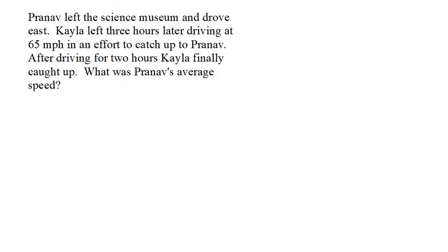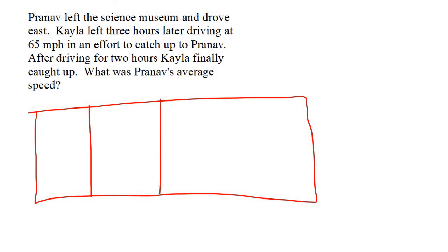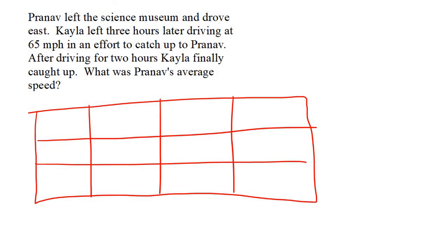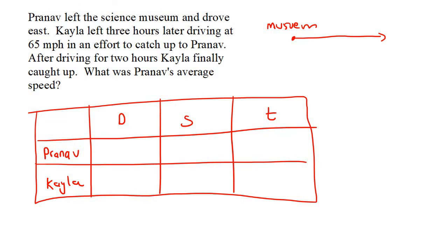Here's the last example. You might be finding this a bit repetitive, but that's exactly what I wanted — to take you from someone who might be nervous about these questions and show you they're actually not that bad. For this type of question we're most likely going to do a table — four columns, three rows. So that's going to be Pranav and Kayla, with distance, speed, and time. Pranav left the Science Museum and drove east. Kayla left three hours later, and after driving for two hours Kayla finally catches up. We know Kayla drives at 65 miles per hour.